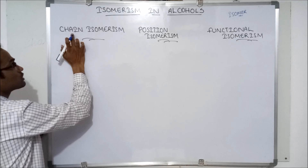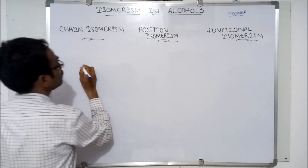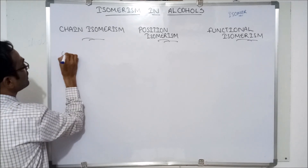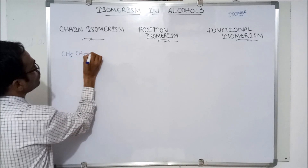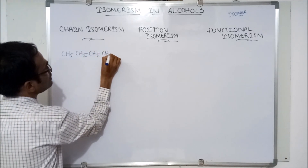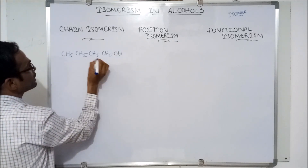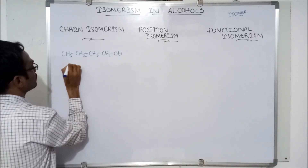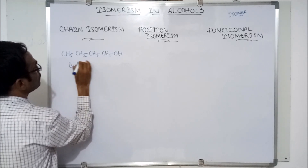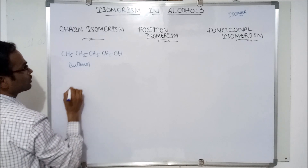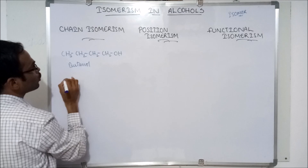Chain isomerism means the difference in the chain of an alcohol group. For example, CH3-CH2-CH2-CH2OH — it is called N-butanol or butyl alcohol. Here in the main chain, 1, 2, 3, 4 carbons are there.